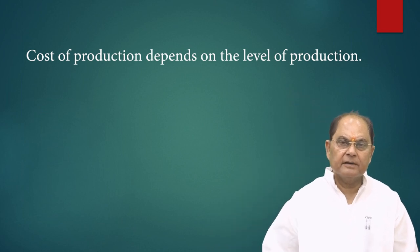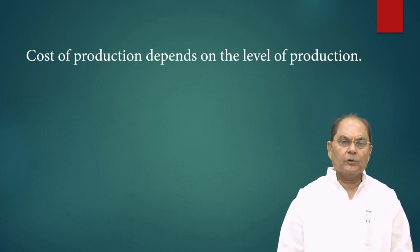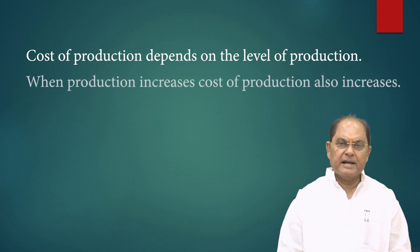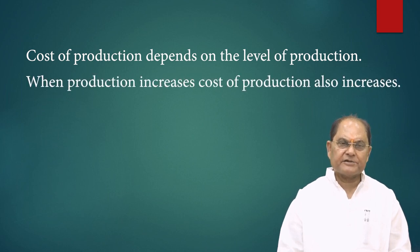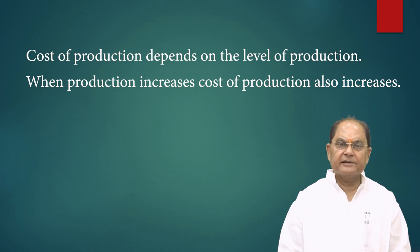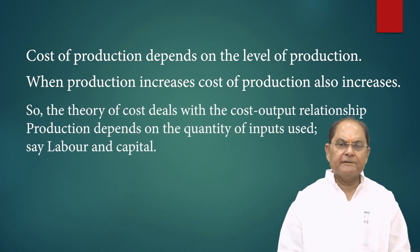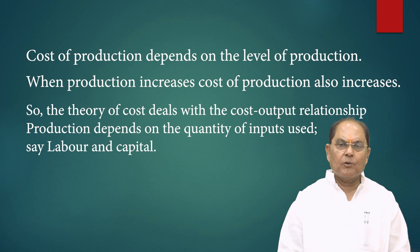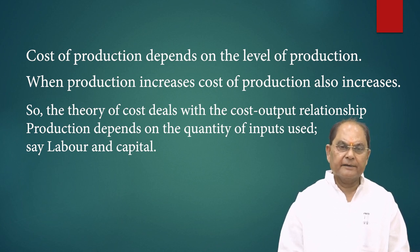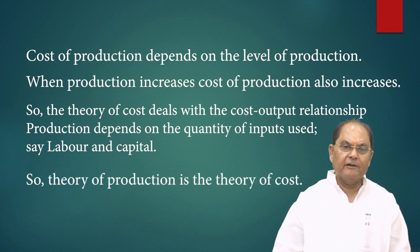Cost of production depends on the level of production. If the level of production is low, the cost of production is going to be higher. If the level of production increases, cost of production is going to be lower. But beyond a certain point, cost of production starts increasing, and the theory of cost deals with the cost-output relationship. Production depends on the quantity of inputs used, say labor and capital. These are the two major inputs. So theory of production is the theory of cost.